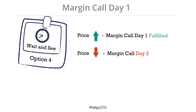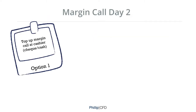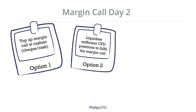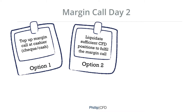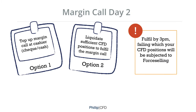Now, what happens on margin call day 2? You have two options. Option 1: Top up the required amount at our cashier, located at Raffles City Tower level 6, by cheque or cash. Option 2: Liquidate sufficient CFD positions to fulfil the margin call. If you do not fulfil your margin call amount by 3pm, we will force sell sufficient CFD positions to fulfil the margin call amount.